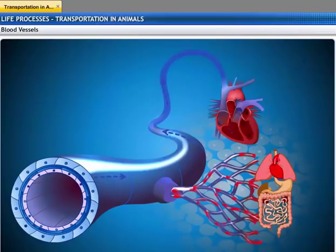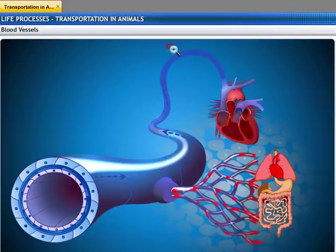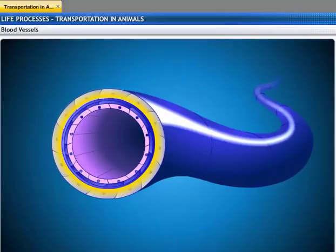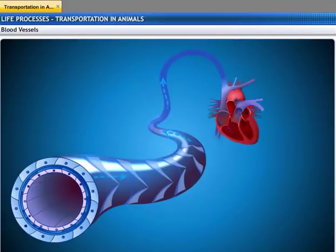The capillaries then join to form veins that carry the blood away from the organ or tissue. Veins collect blood from different organs and transport it back to the heart. As compared to arteries, veins have thinner and less muscular walls, because the pressure of the blood they carry is much lower. Due to the same reason, veins have valves that allow the blood to flow only in one direction, ensuring that the flow of deoxygenated blood is one way — only towards the heart.